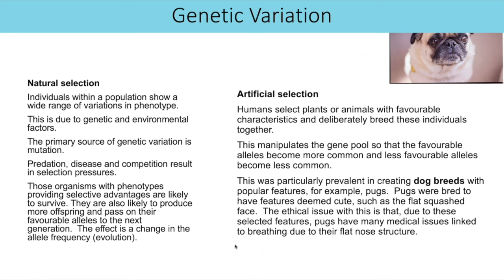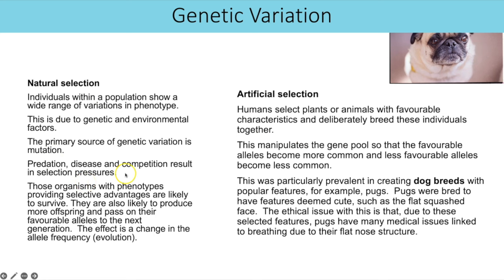Genetic variation can result from natural selection or artificial selection. In natural selection, genetic variation within the population arises from random mutations creating new alleles, and selection pressures — such as predation, disease, or competition for resources — determine which phenotypes have the selective advantage. Those organisms are more likely to survive, reproduce and pass on favourable alleles, resulting in evolution.